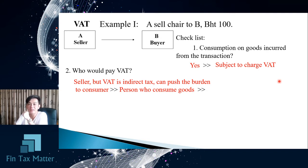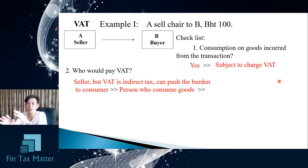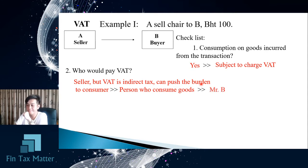However, since VAT is a kind of indirect tax, A will push that tax burden and tax liability under the law to the consumer by charging it as part of the price, calling it VAT to be collected by the law. So the person who consumes or buys the product will be the person to pay VAT economically — that is Mr. B. But A, who is the seller, is the payer by the law.